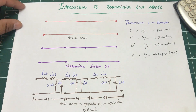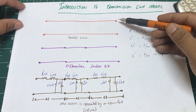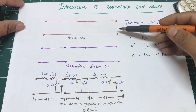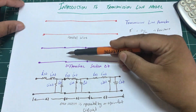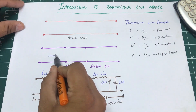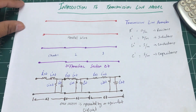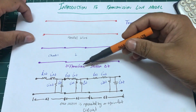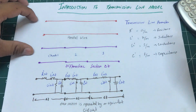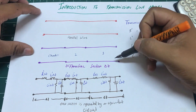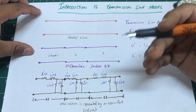Before we do that, let's try to understand what the model looks like. Say I have a piece of wire — a parallel piece of wire with a positive side and a negative side. I'm going to break this wire down into smaller chunks — let's say three smaller chunks: chunk one, chunk two, and chunk three. We call these differential sections, and each is denoted with delta z.